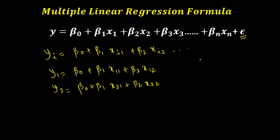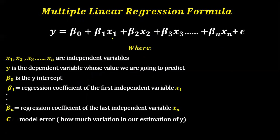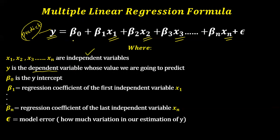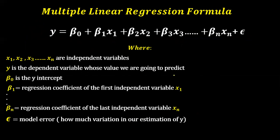An epsilon term will be added to this equation. Here x1, x2, x3, ..., xn are called independent variables and y is the dependent variable. We are going to predict the value of y. Beta0 is the y-intercept, and β1, β2, β3 are the regression coefficients of the corresponding variables. Epsilon is called the model error — it represents the variation in our estimate of y. We won't include it when we have a normal distribution with mean zero.